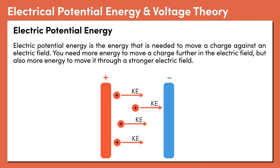If you let the positive particle go, it will snap back to the negative plate, pulled by the electric force. The energy that you use to move the particle away from the plate is stored in the particle as electrical potential energy. It is the potential that the particle has to move when it's let go.